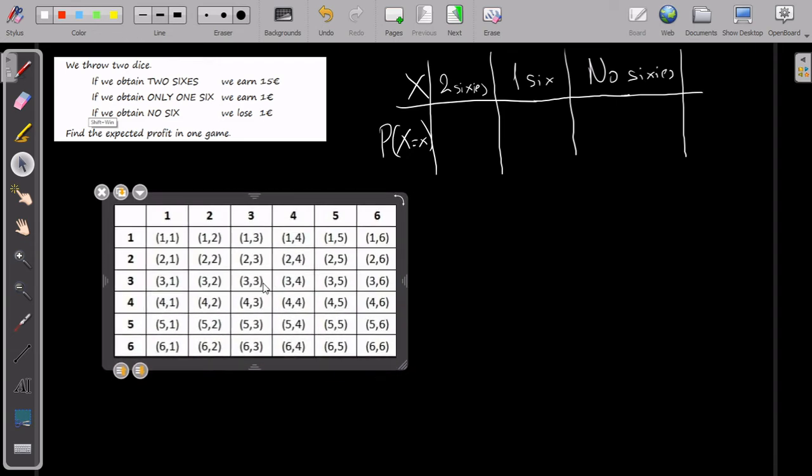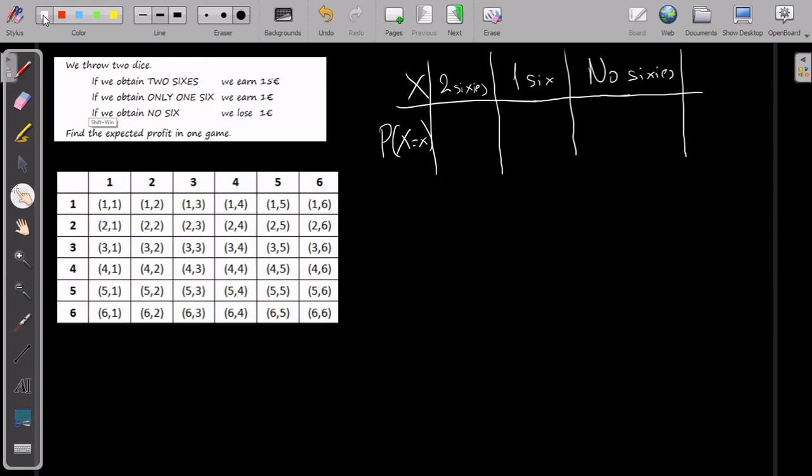Now, if you see it here, what's the probability of bringing two sixes? I go in my table and I see how many sixes I can find. Only one.